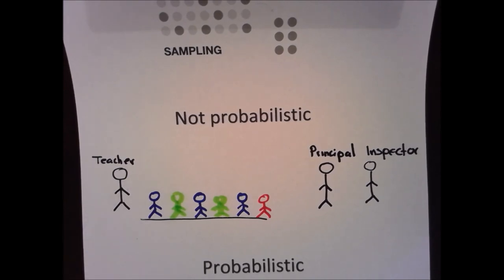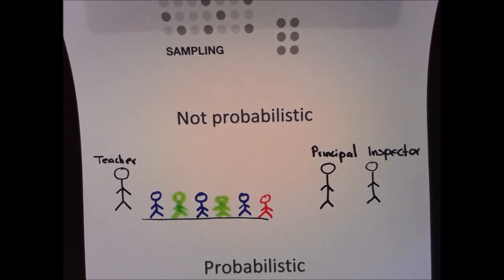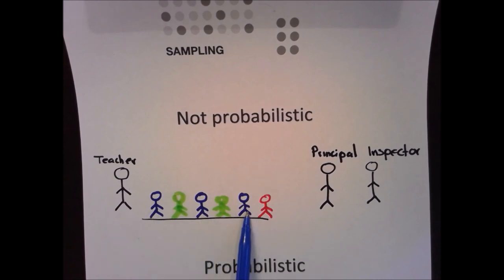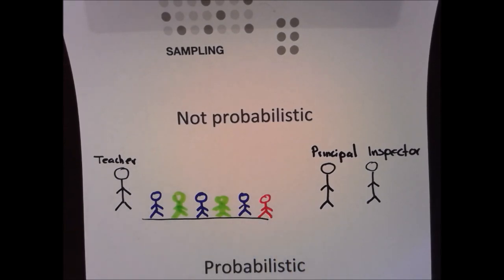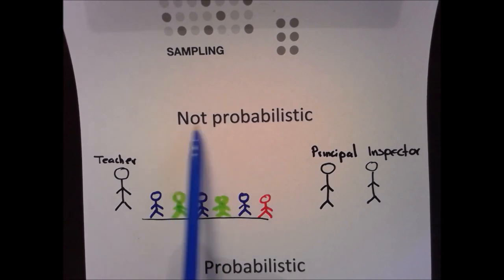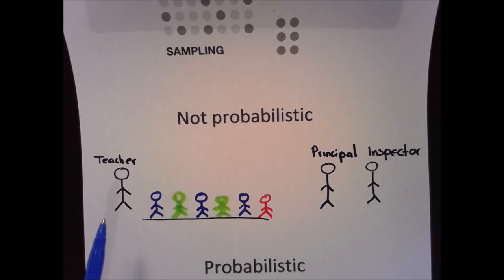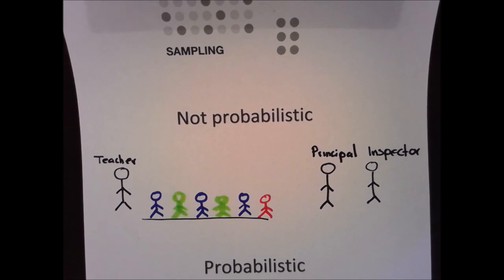What do you think the teacher should do? Obviously, if you want to get the best notes on the test, you are going to send the smart students — maybe this one and this one — but never the struggling student, because you want good results. This is called non-probabilistic because you as a teacher are producing the sample according to your convenience, and this is not random.